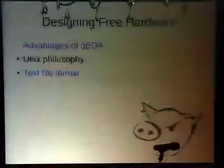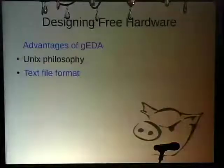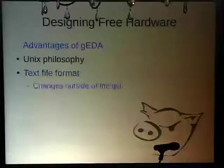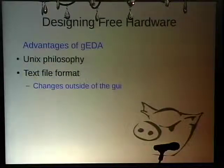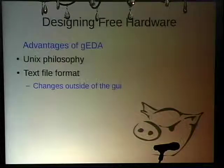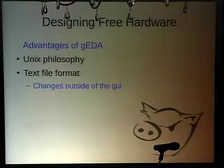One of the other advantages is that the file format for all the different parts of JITA are just text files. One of the nice things is you can change them outside the GUI — just open a text file in a text editor, change a comment, add comments, move things around easily. There are use cases where it's almost easier to do it that way. For example, on one project we wanted to resize all the through holes so they had the same drill size — we just did a find and replace, and all the drill holes were the same size.